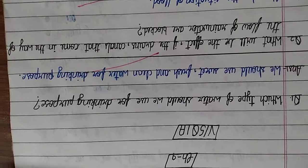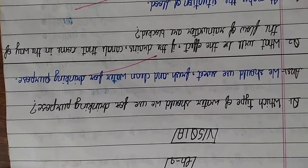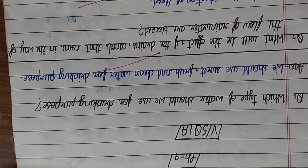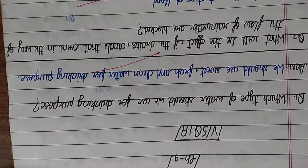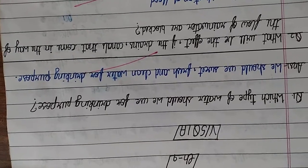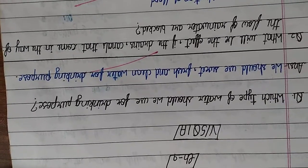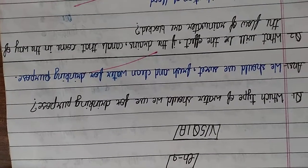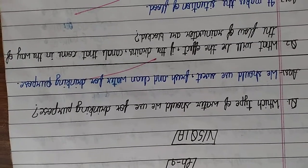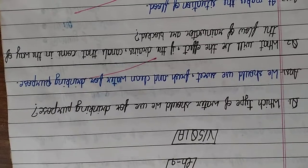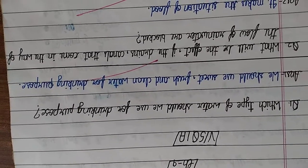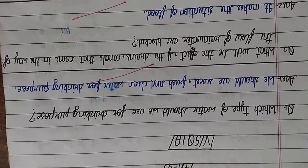Which type of water should we use for drinking purpose? Kon sa paani ko drinking ke liye use karna chahiye? We should use sweet, fresh and clean water for drinking purpose. Hume meatha, taja aur saaf paani use karna chahiye.